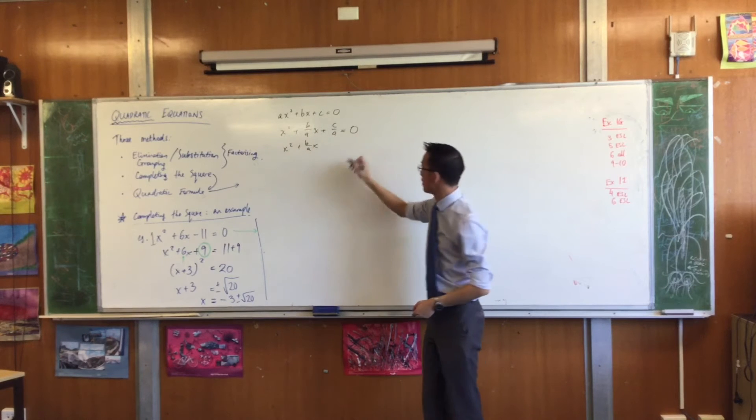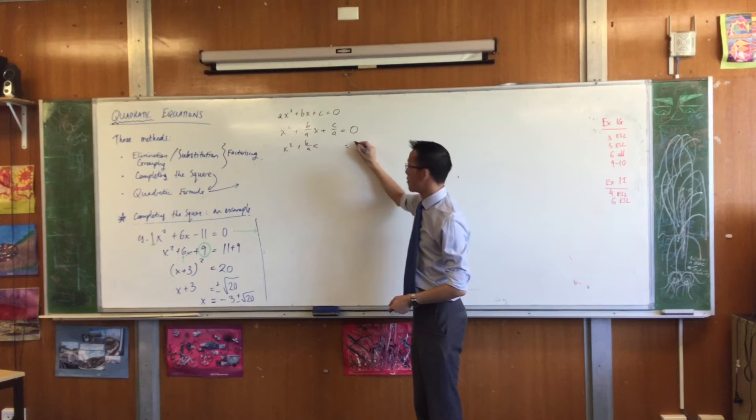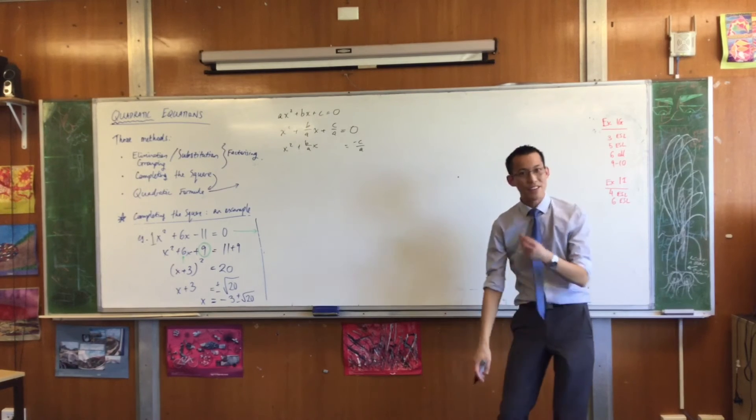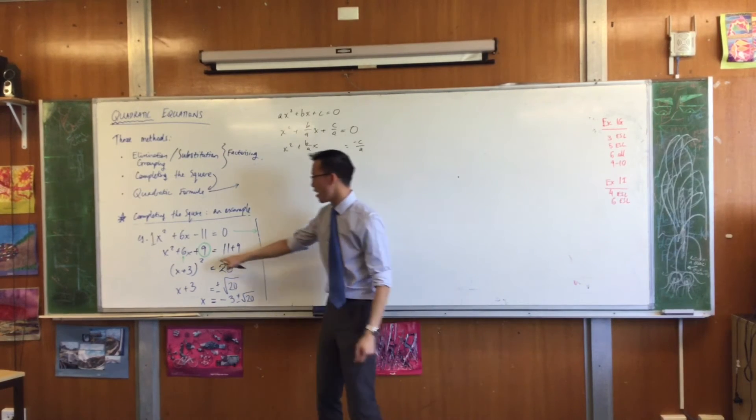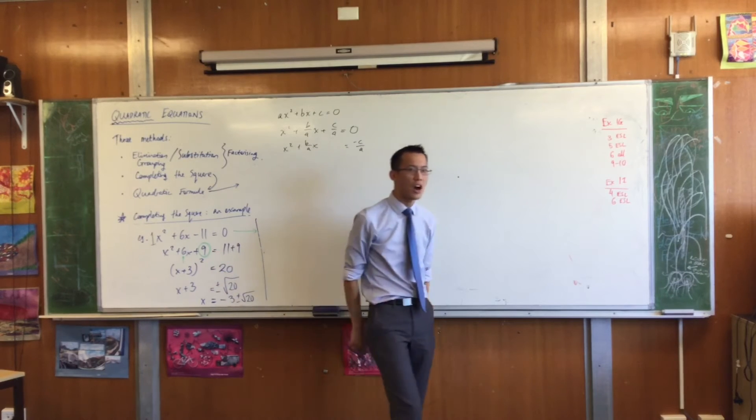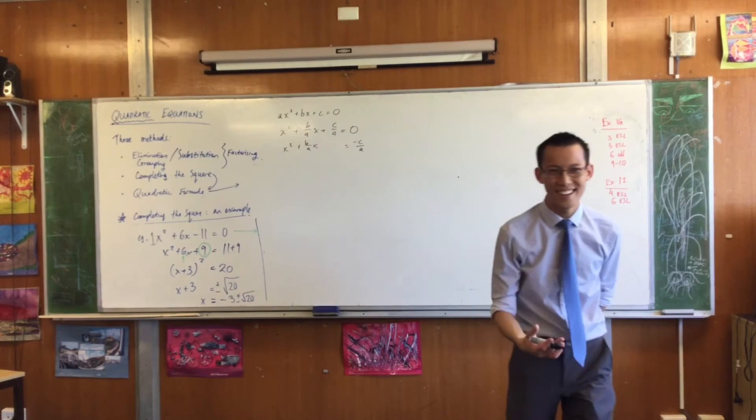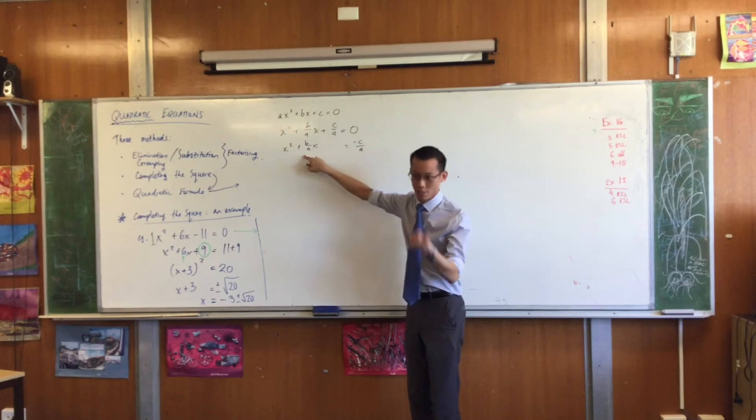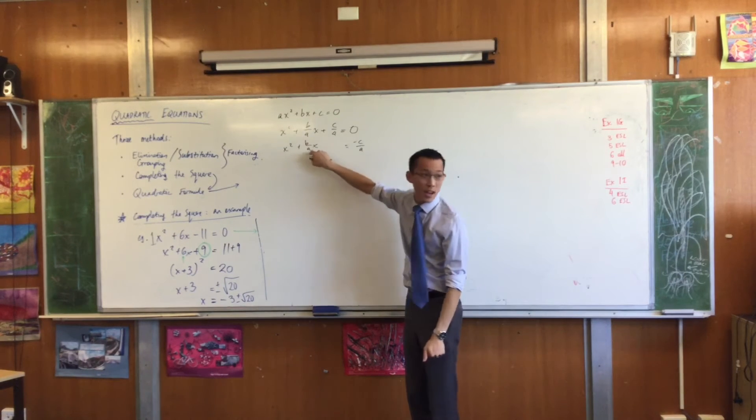Now at this point we added 9. How did you know to add 9? Yes Lee. Yep, you halved and then you square.